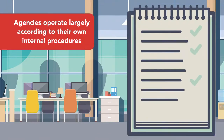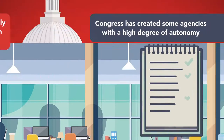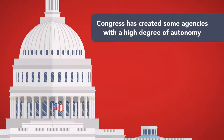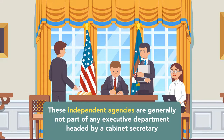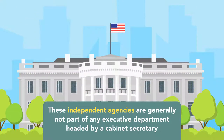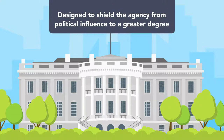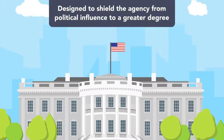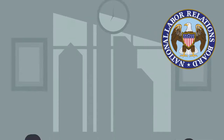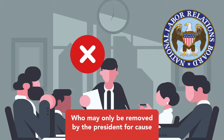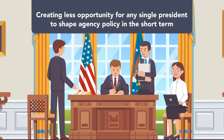While agencies operate largely according to their own internal procedures under the general umbrella of the executive branch, Congress has created some agencies with a high degree of autonomy, largely free from control by other parts of the executive branch and from the president. These independent agencies are generally not part of any executive department headed by a cabinet secretary, and are designed to shield the agency from political influence to a greater degree. For example, the National Labor Relations Board, which enforces federal labor law, is headed by a five-member board with staggered terms. They may only be removed by the president for cause, creating less opportunity for any single president to shape agency policy in the short term.